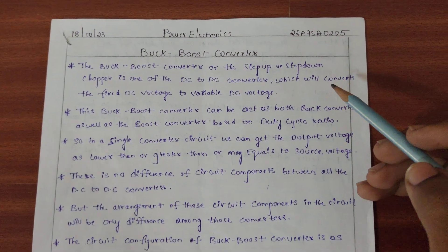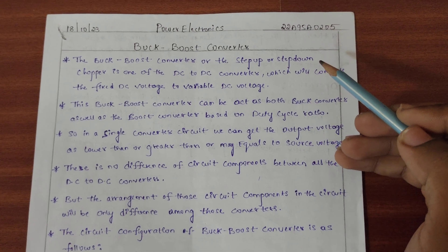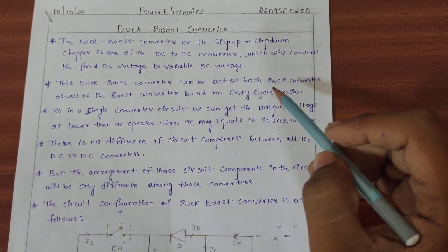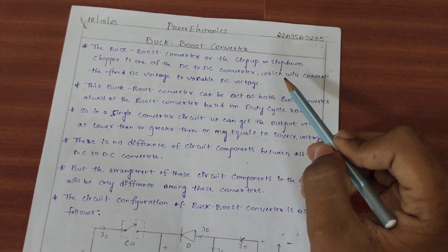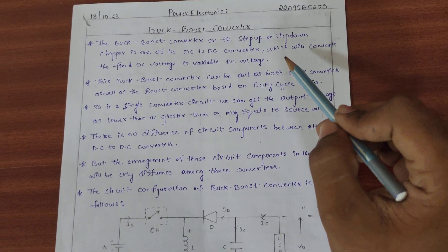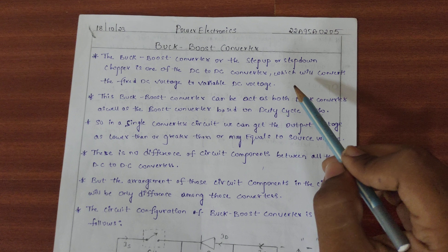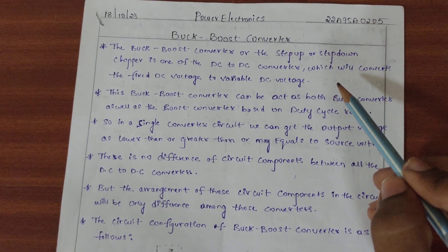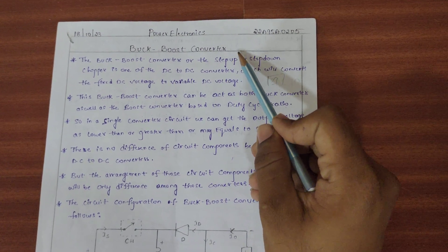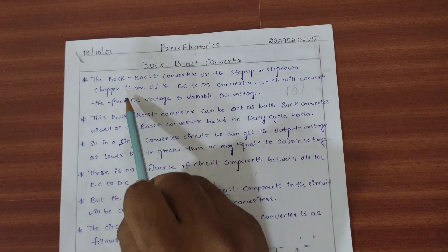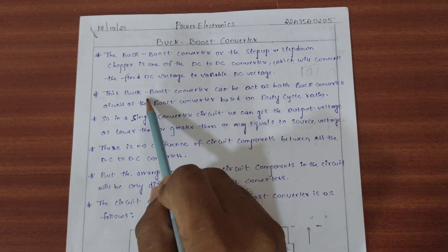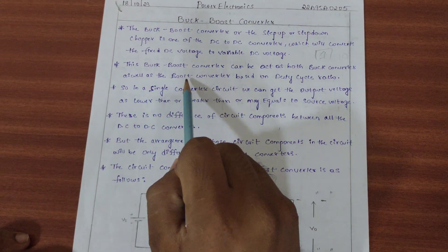Hi everyone, welcome to our channel. In the last previous videos we discussed about the buck converter and the boost converter. So in this video I want to discuss about the buck-boost converter. In this video we can step down or step up the voltage. Voltage increase or decrease in a single circuit. The buck-boost converter or step-up or step-down chopper is one of the DC to DC converters which converts the fixed DC voltage to variable DC voltage. This buck-boost converter can act as both buck converter as well as the boost converter.